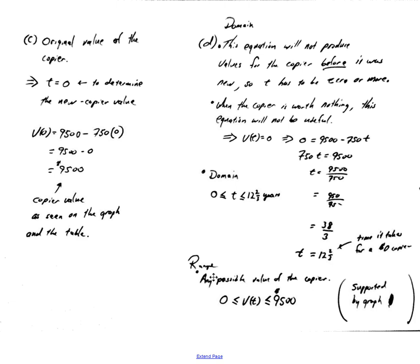As far as range, even though range wasn't asked here, I will tell you the range is any possible value of the copier. The value was $9,500 when it was new. The value is worth nothing when it's 12⅔ years old. So the value could be any number between its new value and nothing.